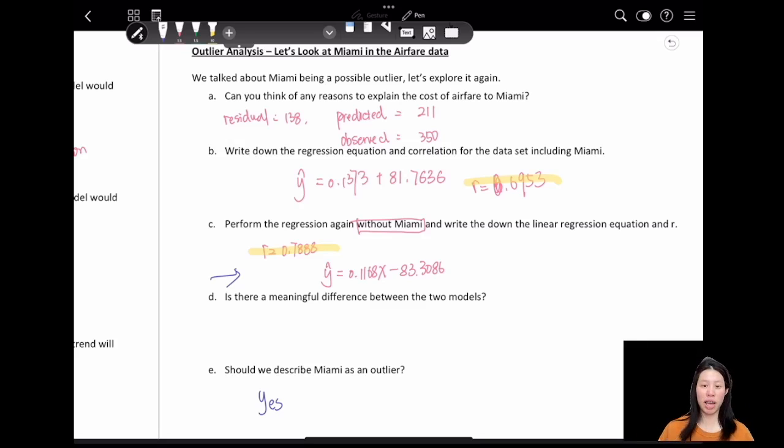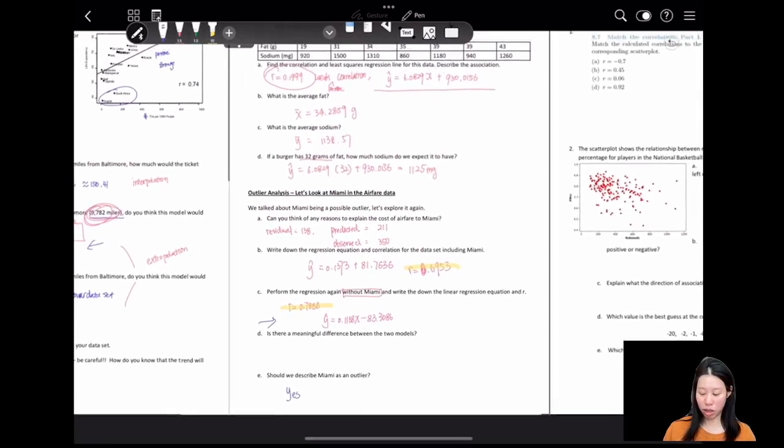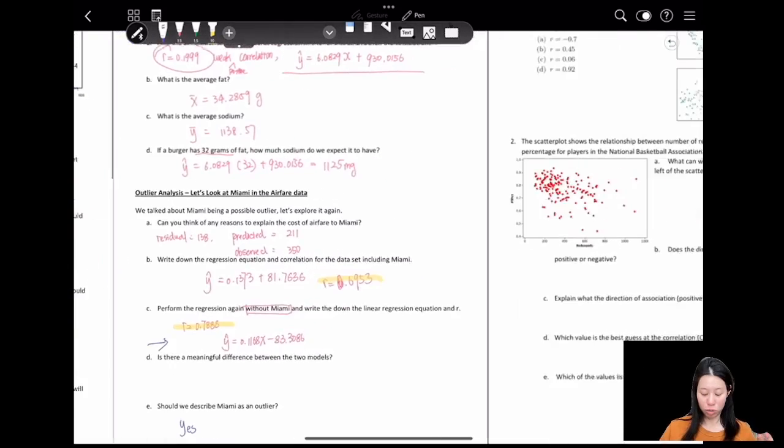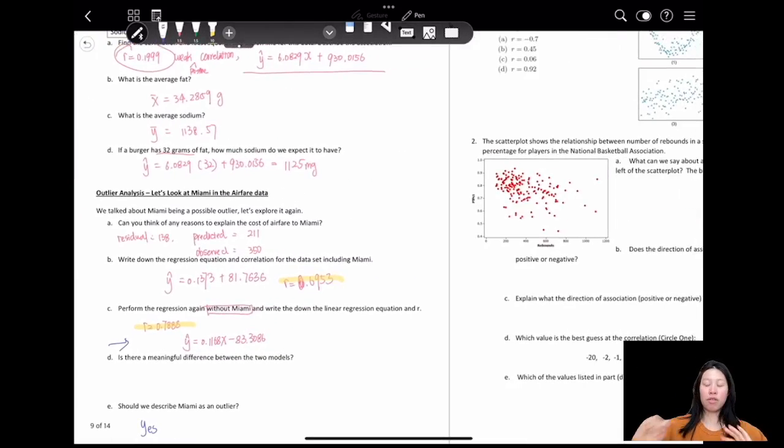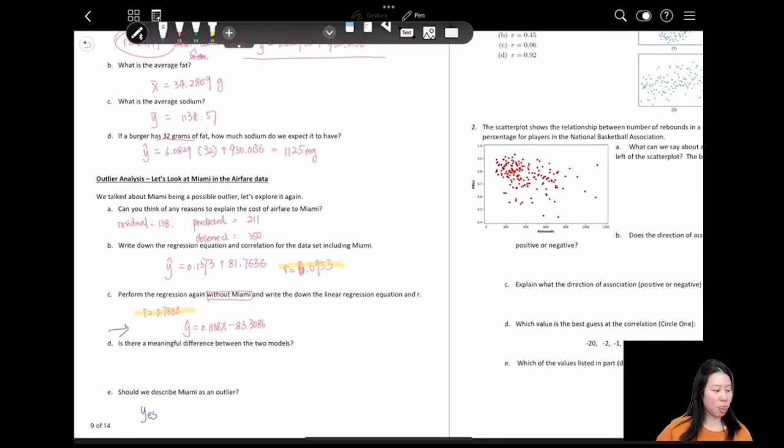Should we describe Miami as an outlier? Yes, because without Miami our second model seems more accurate. So yes, Miami is the outlier. Okay, so that's it - that's the other features of correlation. In the next class we'll have more examples about the regression model. I'll see you next time.